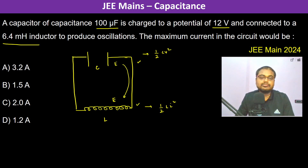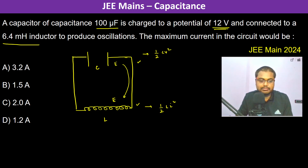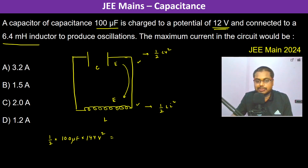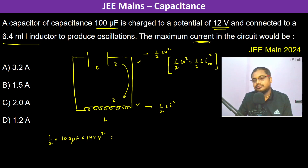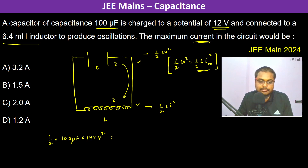The capacitor is charged to a potential of 12 volts, so therefore the energy of the system is half into 100 microfarads into V squared, which is 144. Half CV squared should be equal to the maximum energy in the inductor: half L into I max squared.